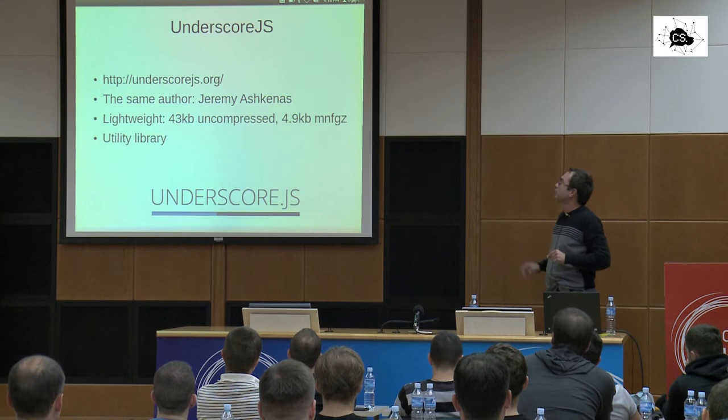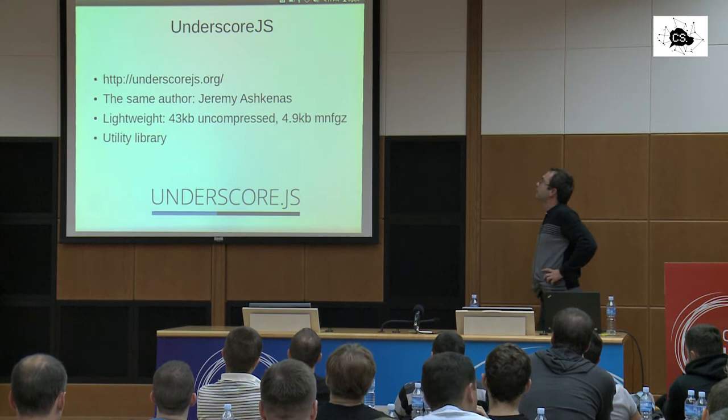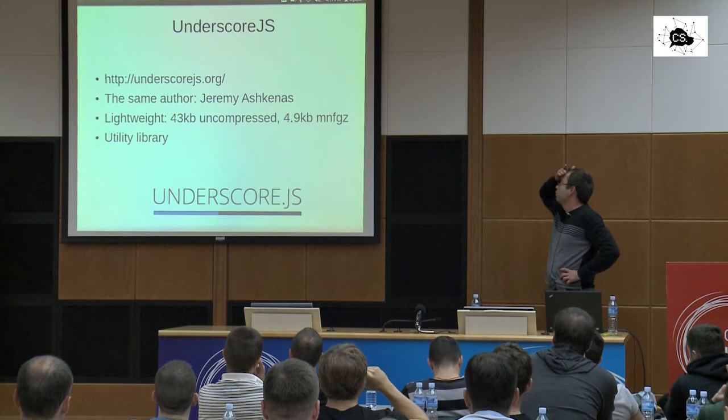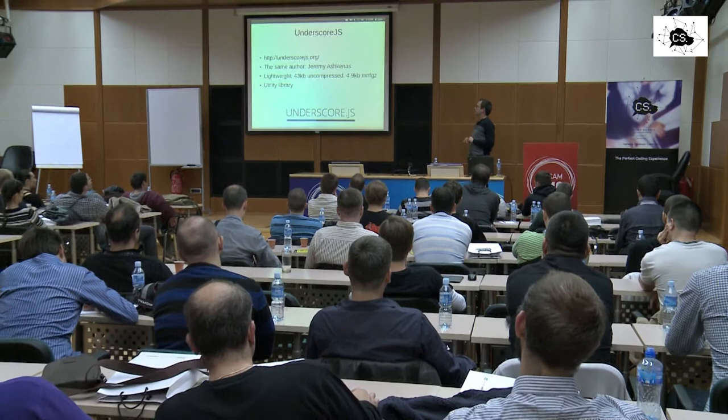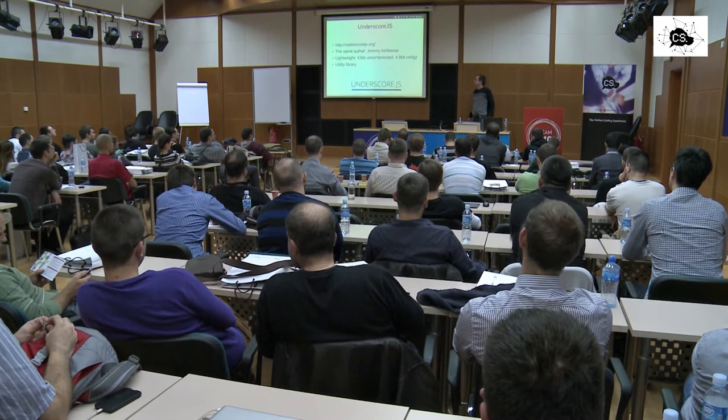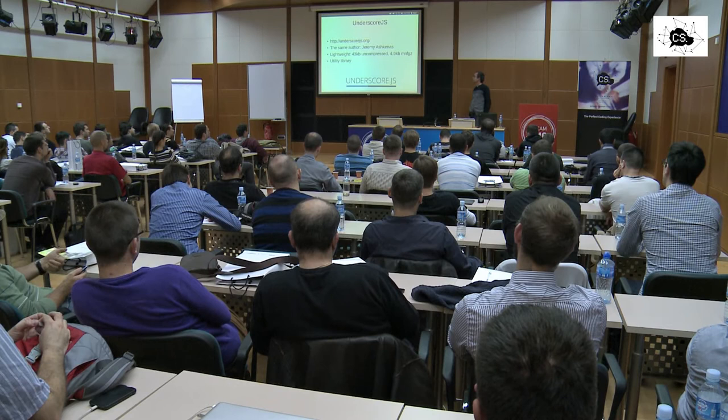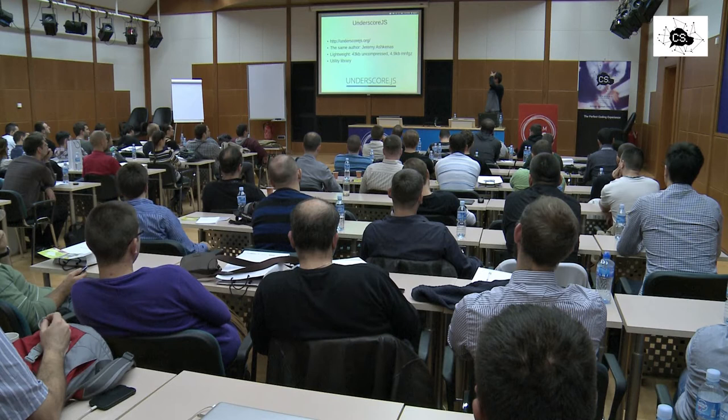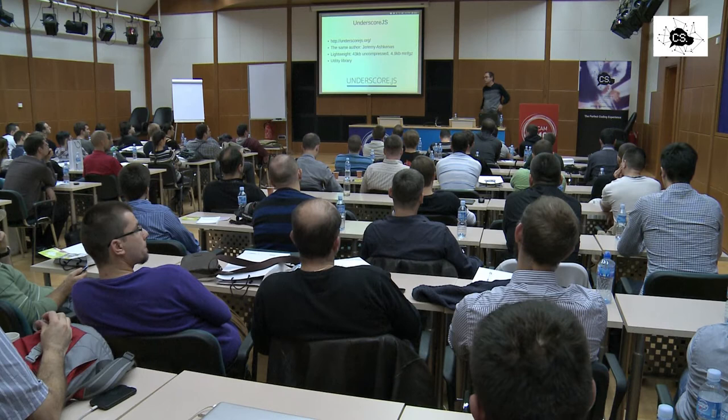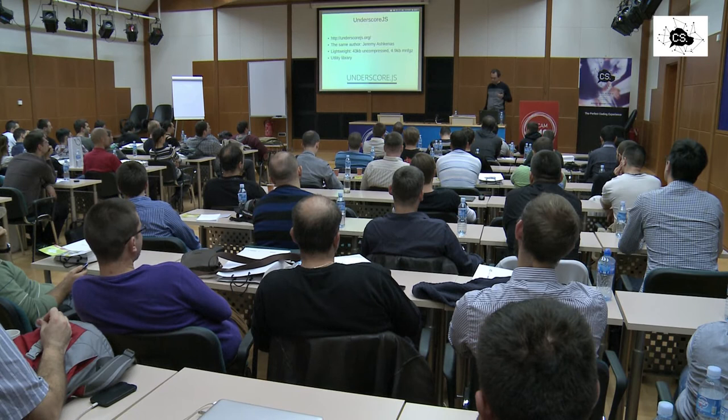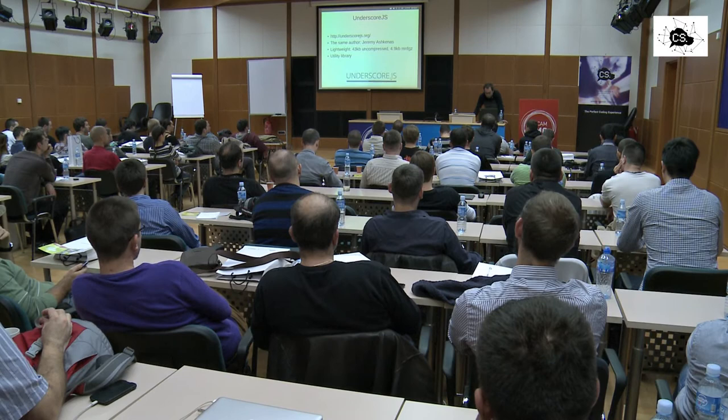So about underscore it's been written by the same author. And as backbone it's really lightweight. As you see 43 kilobytes uncompressed and less than five kilos when it's minified and gzipped. So it's a utility library and it helps you do some common things regarding JavaScript objects, arrays, collections. And also it has its own included micro templating engine which I'll show later on. Of course you're not forced to use that templating engine. You can use any other that you're used to for example Mustache. But if you don't have too many difficult templates then this one is kind of micro templating. It was big enough for our project.